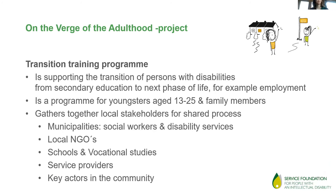The 'On the Verge of Adulthood' training programme is for young persons with disabilities who are in the transition phase from secondary education to the next phase of life — for example, further study or employment. Normally the youngsters are aged from 13 to 25, and we try to start quite early. We always involve family members in our different processes.